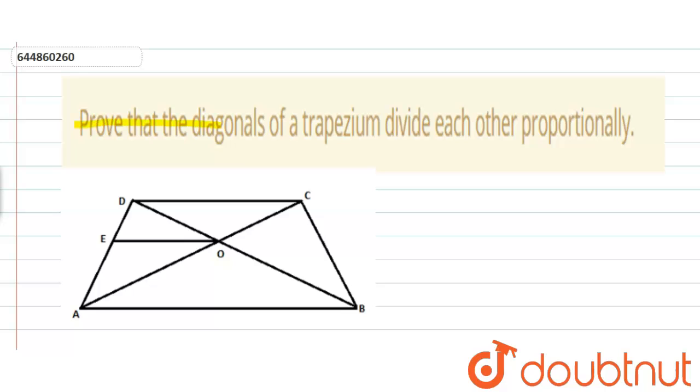The question is: prove that the diagonals of a trapezium divide each other proportionally.